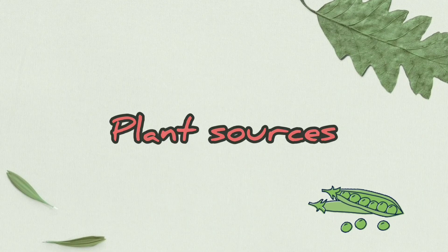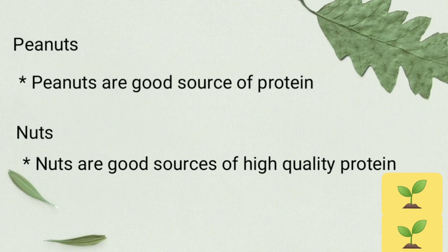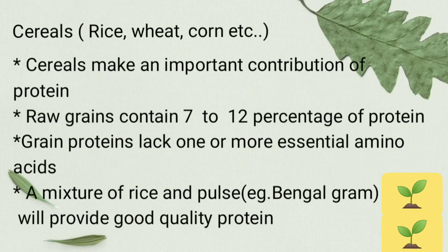Plant sources of protein. Vegetables are poor sources of protein except legumes. Legumes provide better quality of plant protein, and also soya bean contains a high quantity of plant protein. But fruits are poor sources of protein. Peanuts and nuts are good sources of protein.